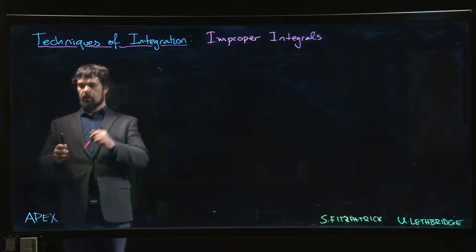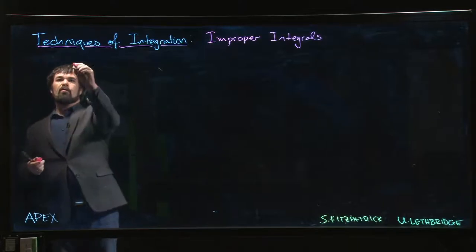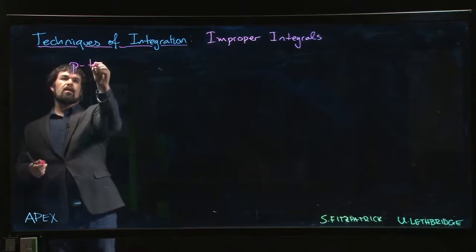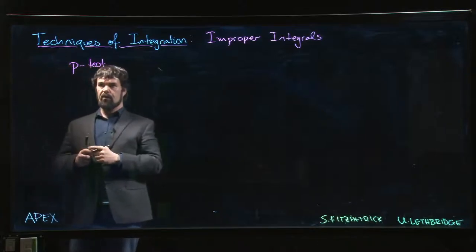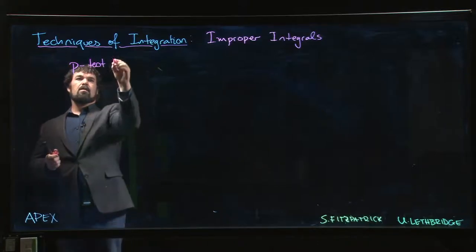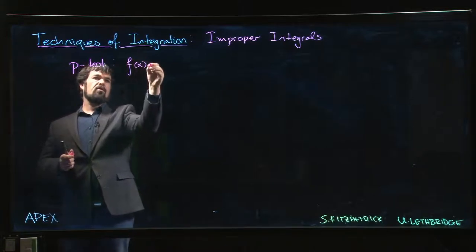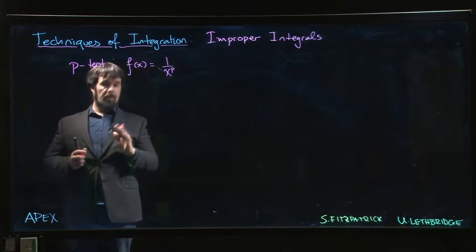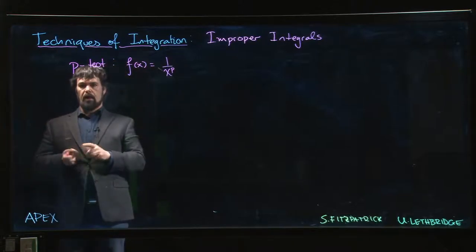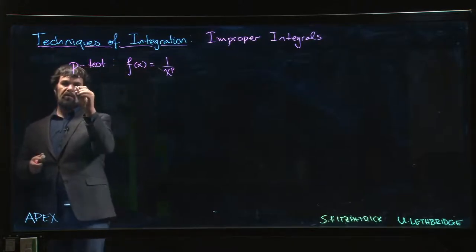So the next thing we're going to look at is a result that's sometimes known as the p-test. The p-test just refers to functions of the form 1 over x to the p. And we're going to look at both types of improper integral.